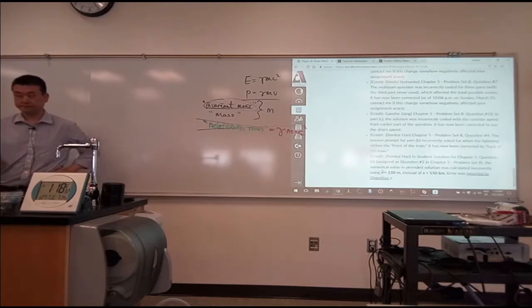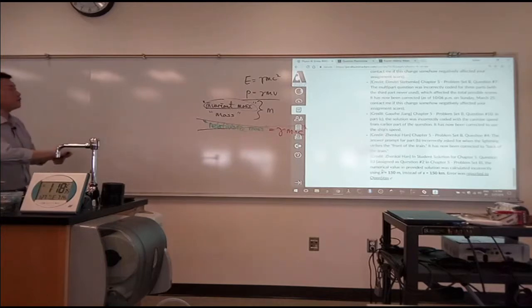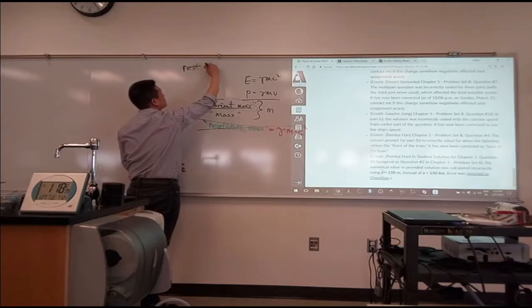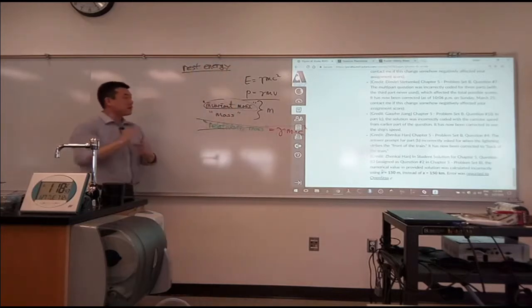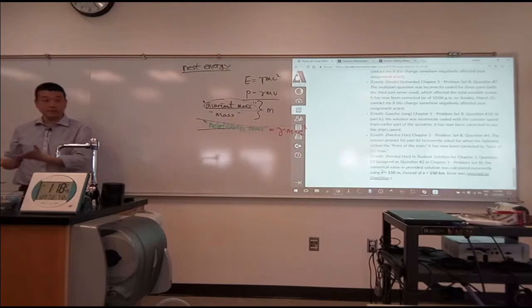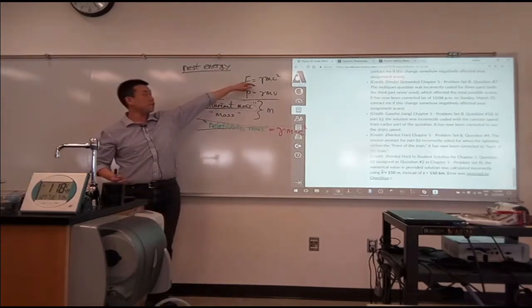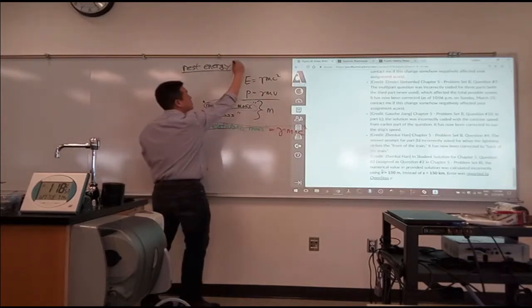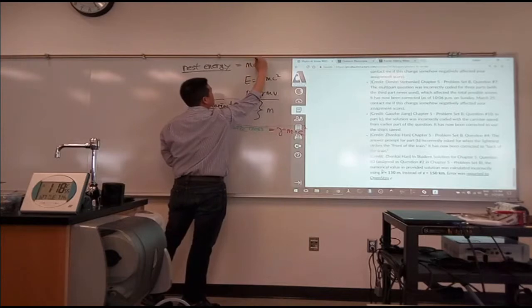So there is the idea of rest energy, which is energy that a particle, something has, even when it's at rest. That's this when gamma is equal to 1. So rest energy is equal to mc squared.